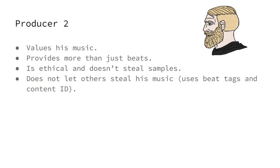Producer number two values his music and does not let other people steal it. He uses beat tags in his music so other people can't steal it. He also uses Content ID, which scans the system for your instrumentals if someone tries to steal them. So that's producer number two: he values his music, provides more than beats, is ethical, and protects his music from theft.